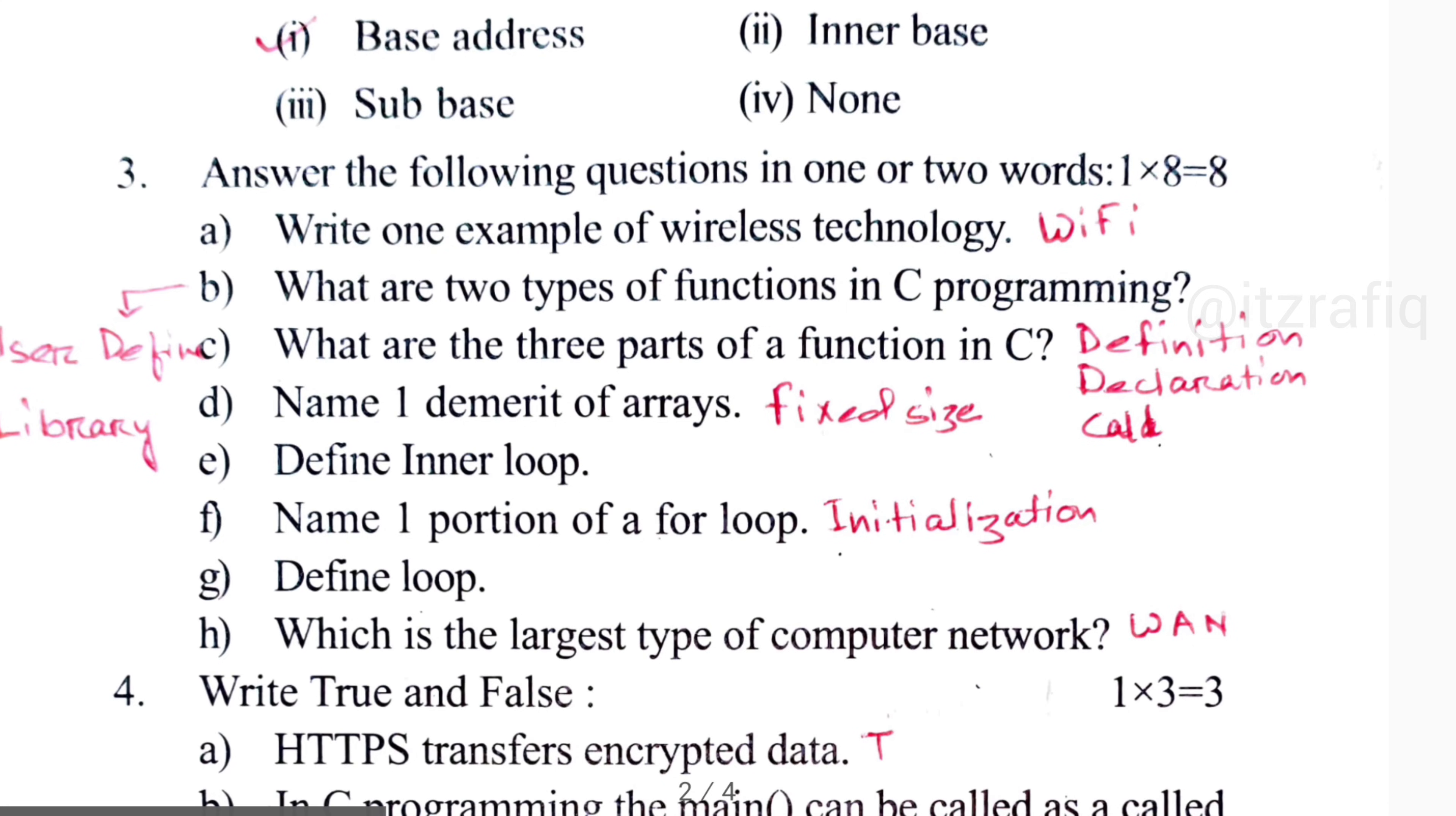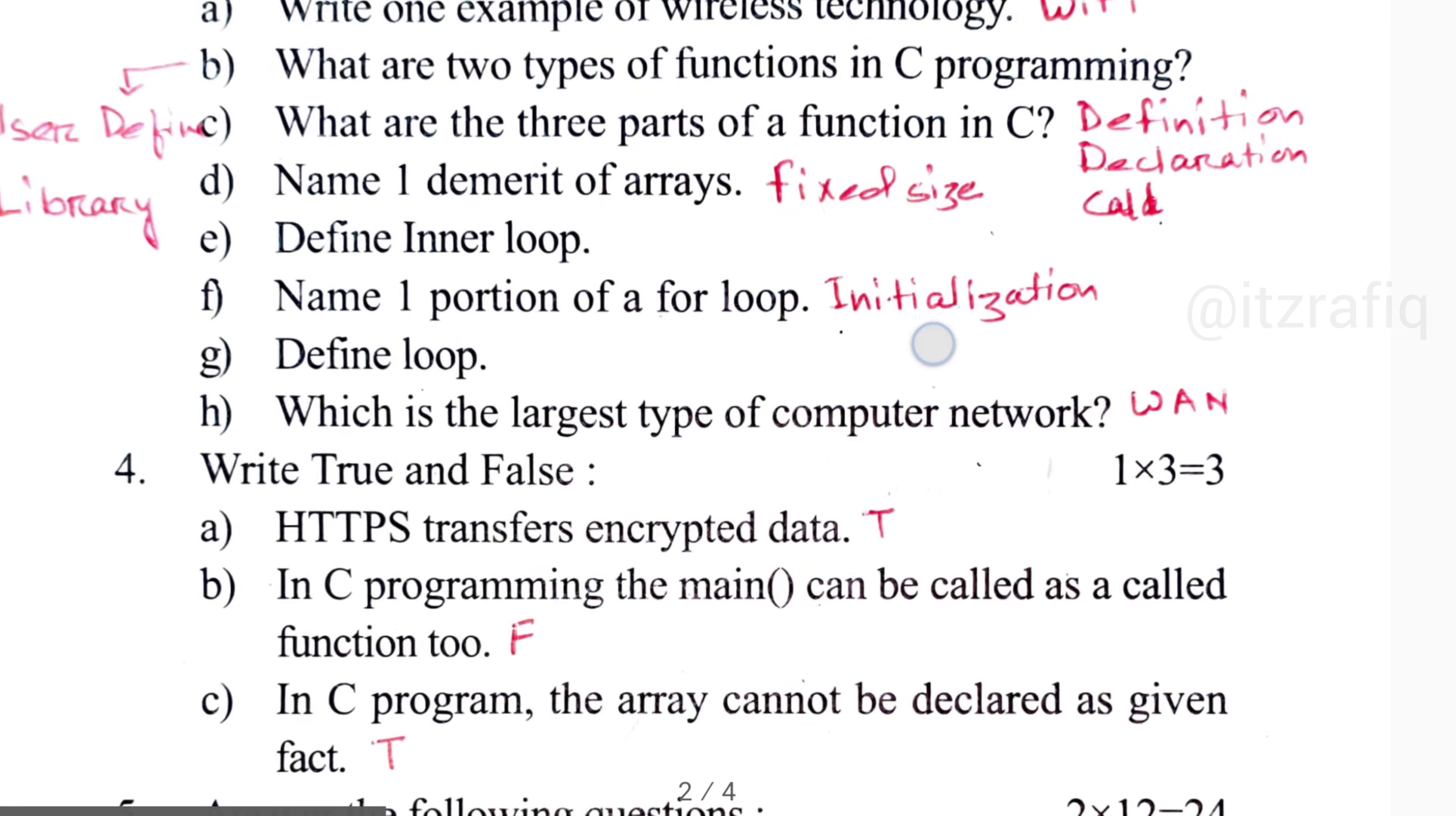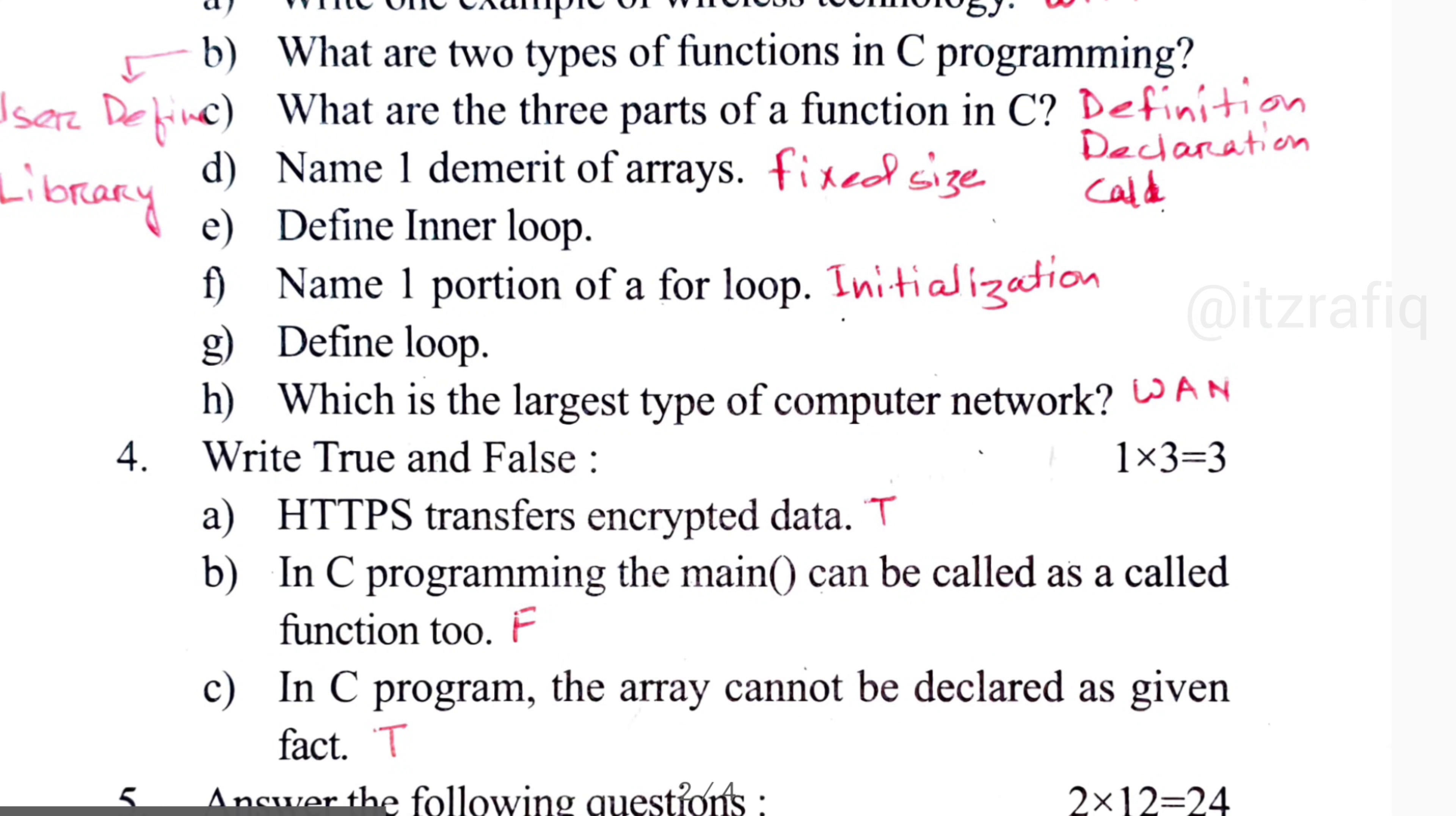Number F, one portion of for loop: it will be initialization. Define loop: the repetition of same instruction for specific number of times is known as loop. Number H, largest type of network: it is WAN.